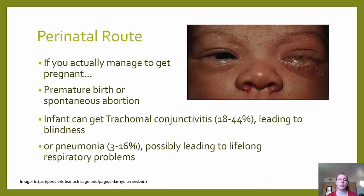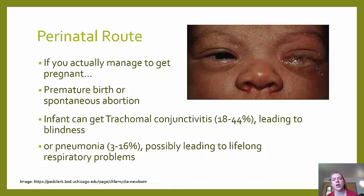Perinatal route: if a mother is pregnant while having Chlamydia, it can result in spontaneous abortion or premature birth. If the infant survives, they can develop trachoma conjunctivitis in 18 to 44% of cases, which can lead to blindness, or develop pneumonia in 3 to 16% of cases, possibly leading to lifelong respiratory problems.